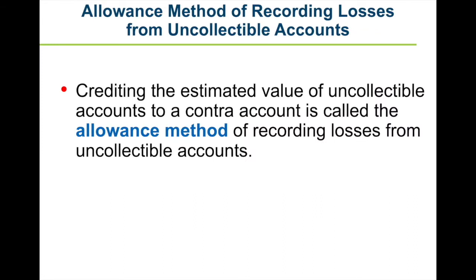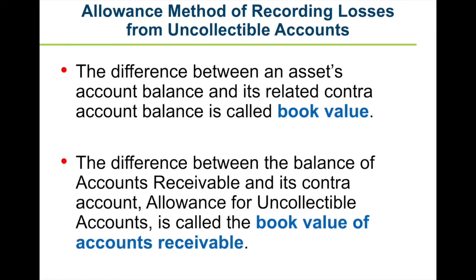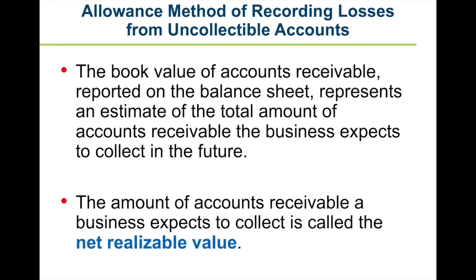Crediting the estimated value of uncollectible accounts to a contra account is called the allowance method of recording losses from uncollectible accounts. The difference between an asset's account balance and its related contra account is called the book value. The difference between the balance of accounts receivable and the allowance for uncollectible accounts is the book value of accounts receivable, representing an estimate of what the business expects to collect. This is also called the net realizable value.